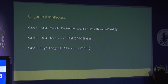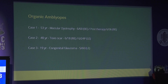Among the organic amblyopes, I tried Revital therapy for three patients. A 53-year-old female with macular dystrophy and 6/60 vision in both eyes showed one line of improvement in the right eye, which had less severe pathology. A 40-year-old male with a toxo scar had visual acuity of 6/18 right and 6/24 left; he completed 40 sessions and was due for follow-up.